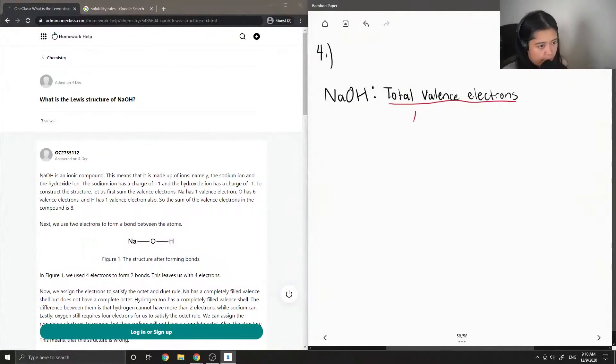So for sodium, there is one valence electron, oxygen, there are six valence electrons, and for hydrogen, there is one valence electron as well. And adding them all up, we get a number of eight electrons in total.